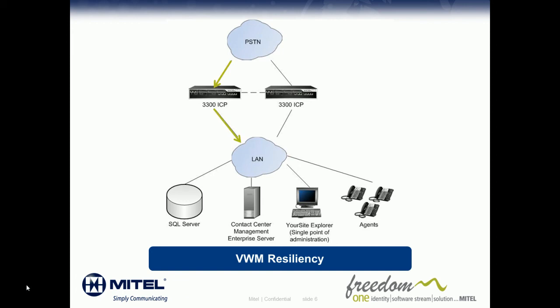These route to the contact center management enterprise server, which houses Visual Workflow Manager and the IVR routing system, over a business LAN, which is also connected to a SQL Server database, your site explorer — which is the single point of administration and configuration for your IVR system — and your contact center agents. Calls come in from the PSTN to the ports on the primary 3300 ICP and are then routed to the contact center management enterprise server, co-located with Visual Workflow Manager. In the event of a failure on the primary 3300 ICP controller, calls are routed to the redundant controller and back to the enterprise server, which ensures that calls are not dropped and continue to be routed in the event of a failure.